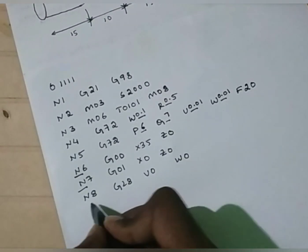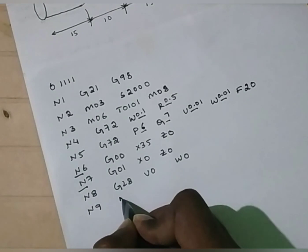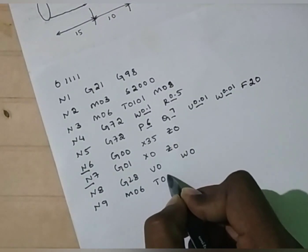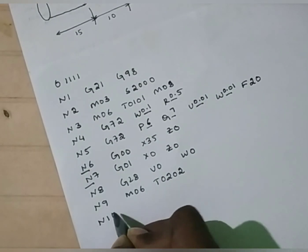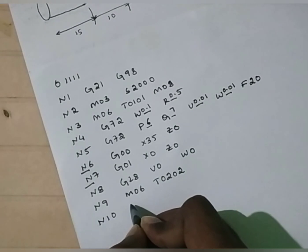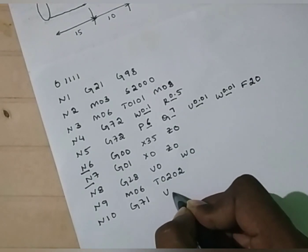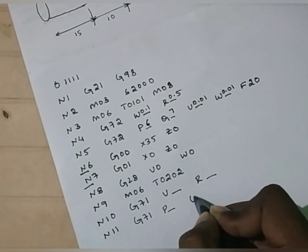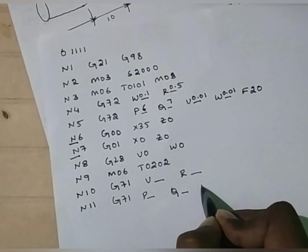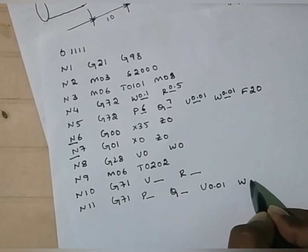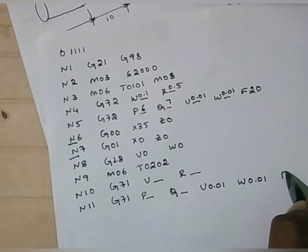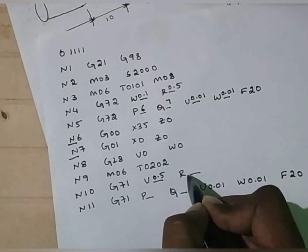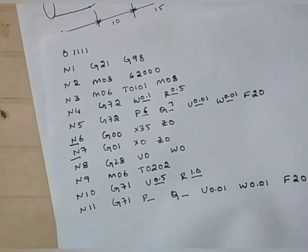Now change the tool to perform step turning. N9: the code to change the tool is M06, and for step turning I am using T0202 tool. M06, T0202. Now N10, we have to write the syntax for step turning. The syntax is G71, U is depth of cut, and R is retract value. Again N11, G71: P value is starting block number, Q value is ending block number. U is finishing allowance — I am going to assume 0.01. W is finishing allowance in Z axis — 0.01. F value, feed value, let it be 20 mm. G71 is turning cycle. U depth of cut — 0.5 mm. R retract value — 1 mm. Now I have to write the code for rough turning.